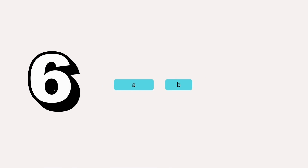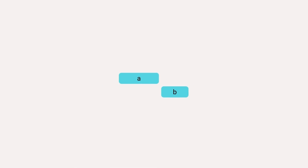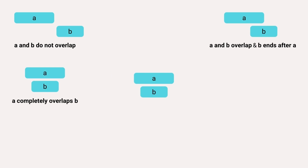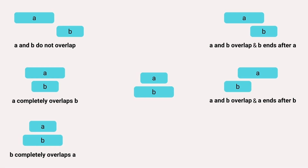Let us understand the different types of intervals possible when comparing two intervals, say A and B. There are six ways the two intervals can relate to each other: A and B do not overlap; A and B overlap and B ends after A; A completely overlaps B; A and B overlap and A ends after B; B completely overlaps A.